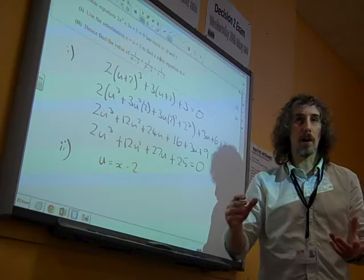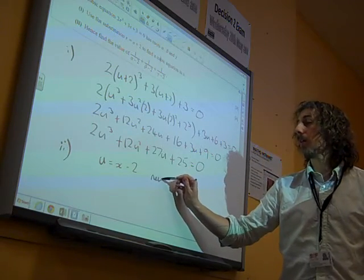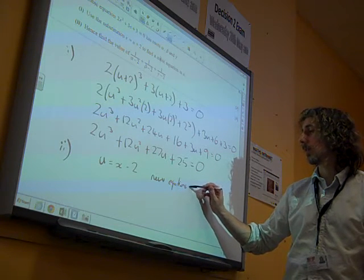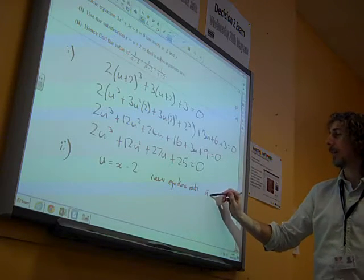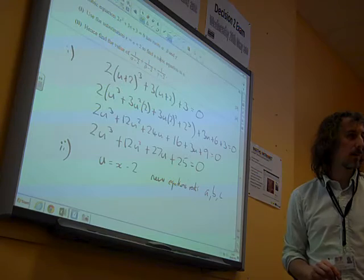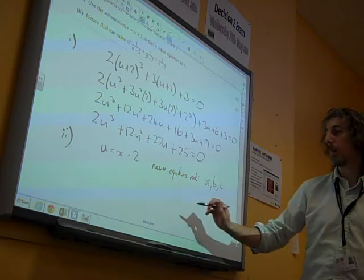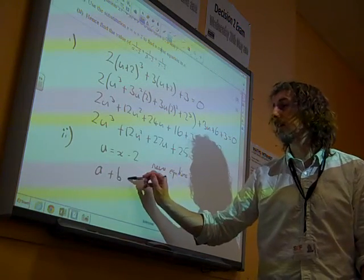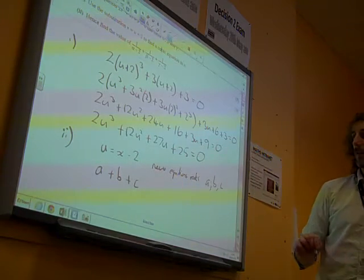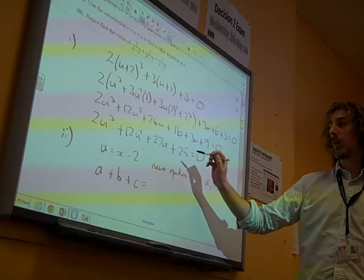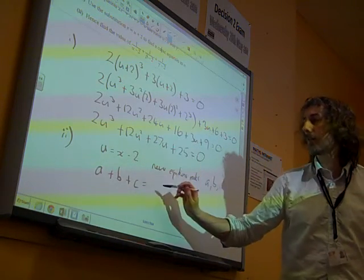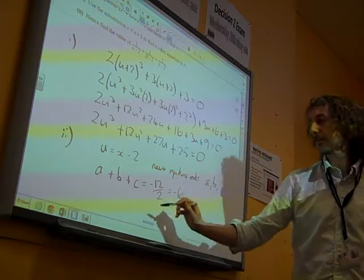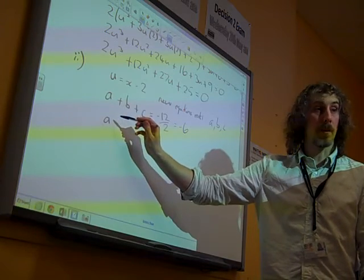So let's think through that way. Our new equation, I'm going to say, has roots a, b, and c, just to keep this simple. So what we're saying is that a plus b plus c, the sum of our new equation's roots, is, well, it goes minus plus minus, so it's minus 12 over 2, so minus 6.